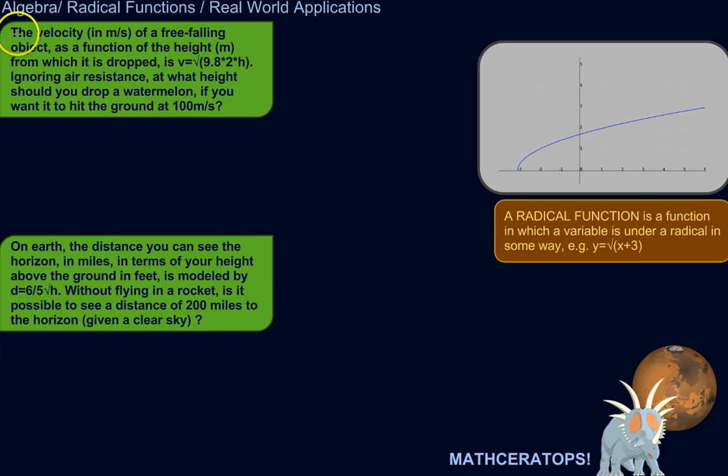So, for example, the velocity in meters per second of a free-falling object as a function of the height from which it is dropped in meters is described by this equation. v equals the square root of 9.8 times 2 times the height from which it's dropped.